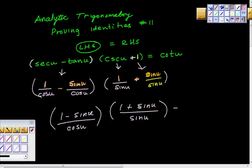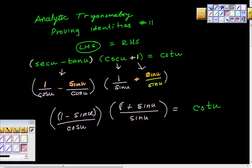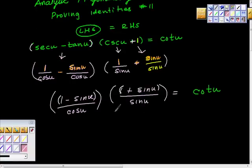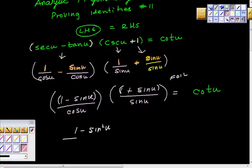Remember that we're expecting this to turn into cotangent of u. Looking at this, I have a difference of squares. So if I go ahead and FOIL this out, I get 1 squared which is 1, and then negative sine u times sine u gives negative sine squared u. So the numerator becomes 1 minus sine squared u, and the denominator is cosine u times sine u.